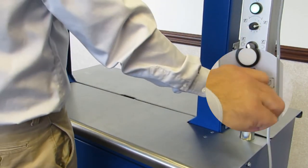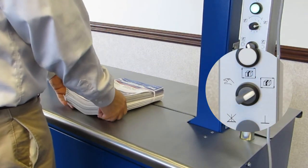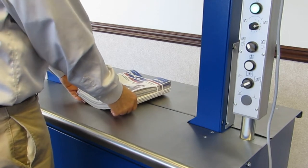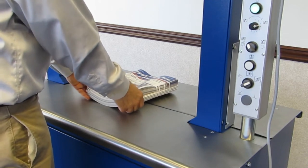The continuous mode applies multiple straps as long as the photo eye remains blocked. Strapping will stop when the bundle is removed from the machine and the photo eye is cleared.